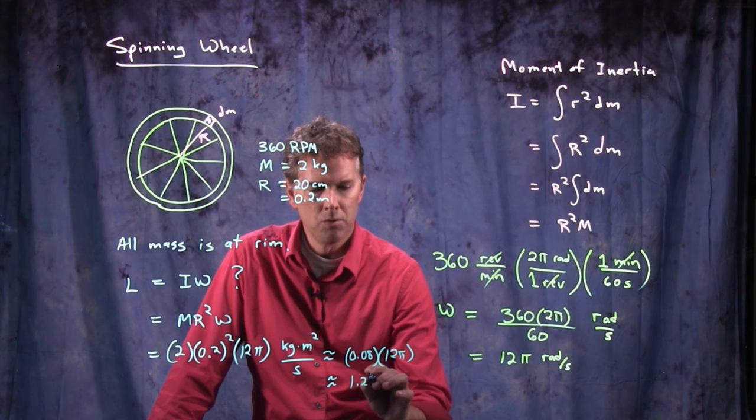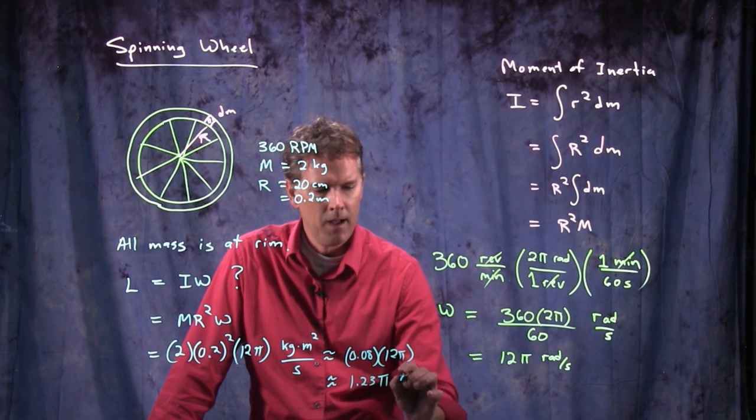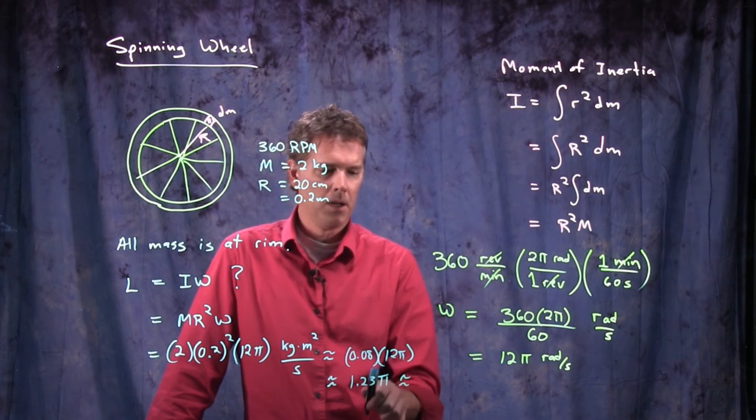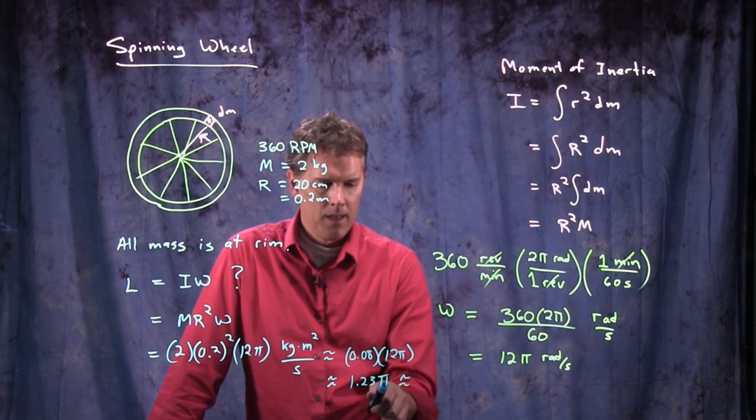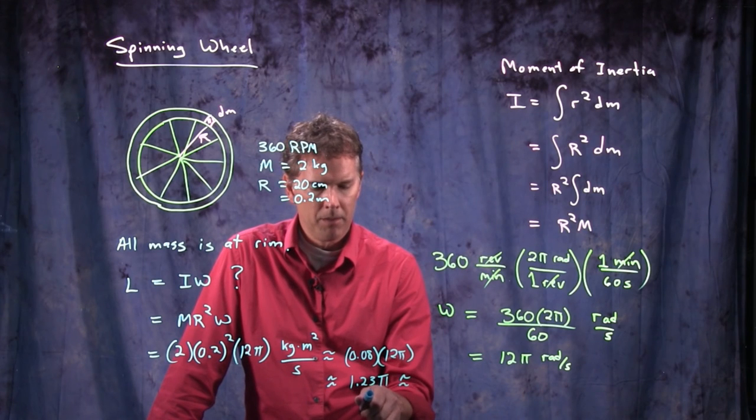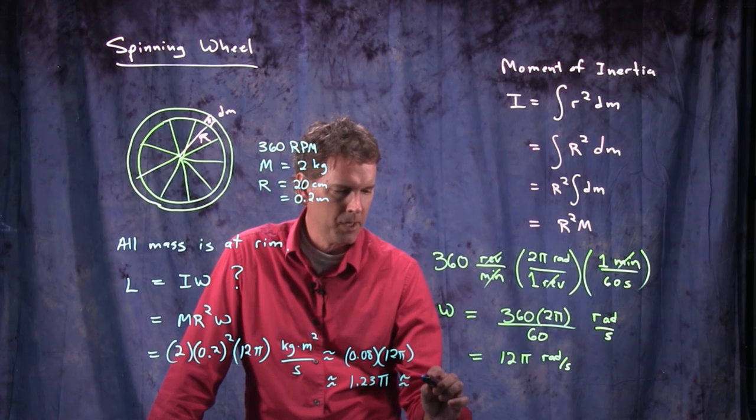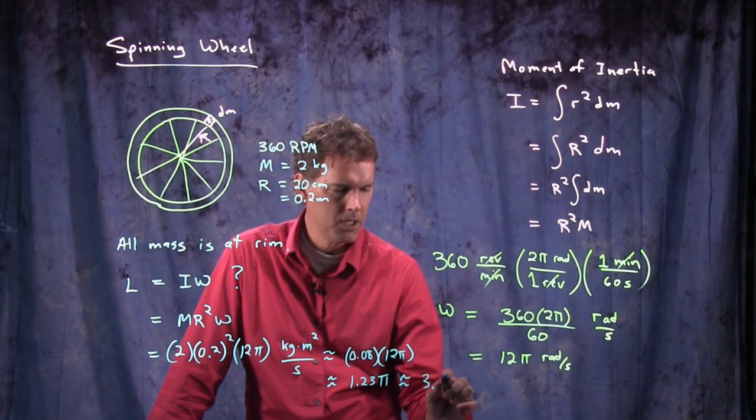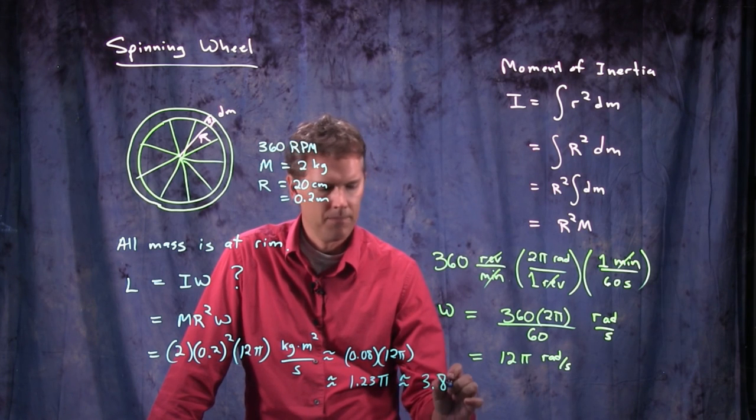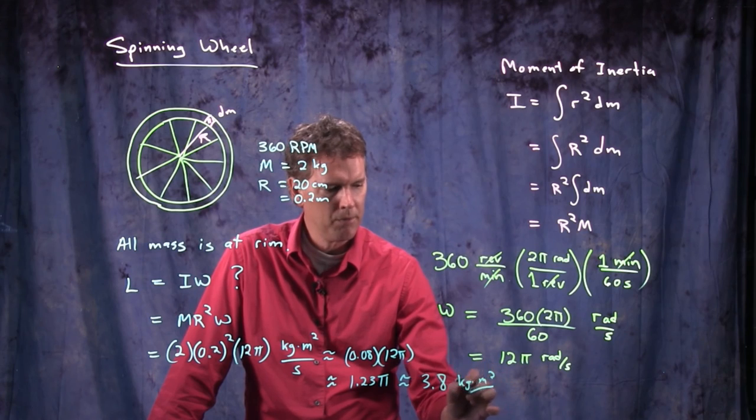And it's going to be a little bit more than that. So we'll say 1.23 pi. And 1.23 pi. That pi is about 3. So multiply this by 3. I get 3.69. And then we want to go up a little bit more. So I'm going to approximate it as 3.8. 3.8 kilogram meter squared per second.